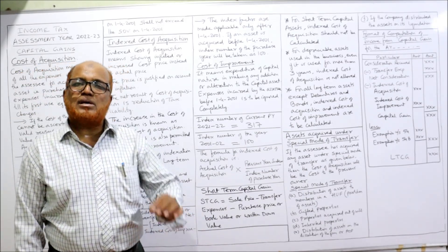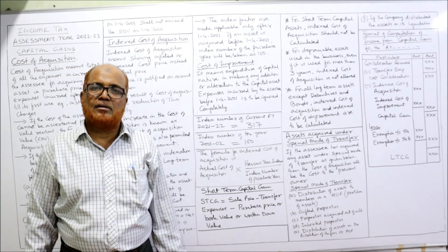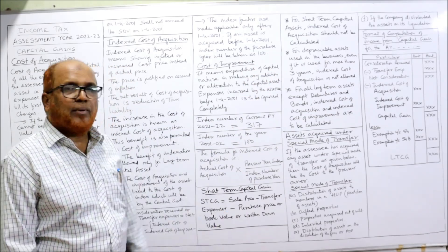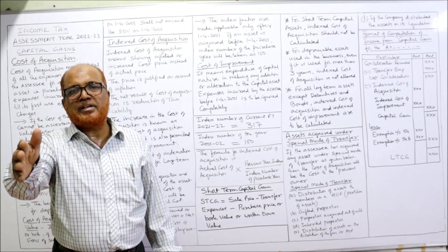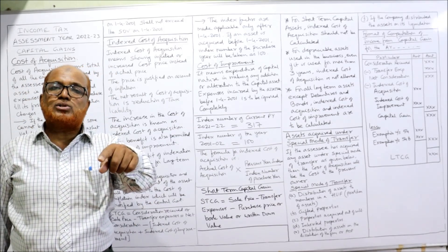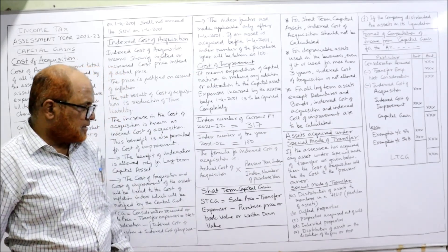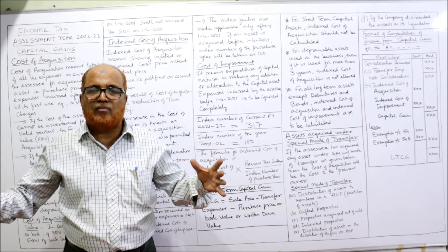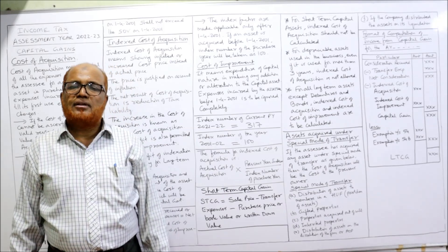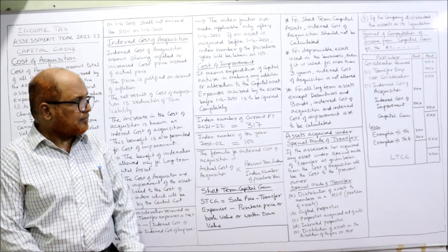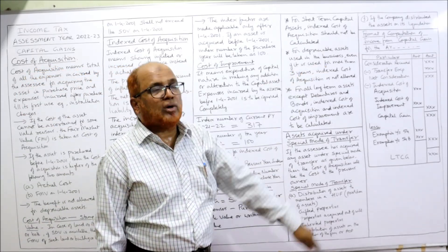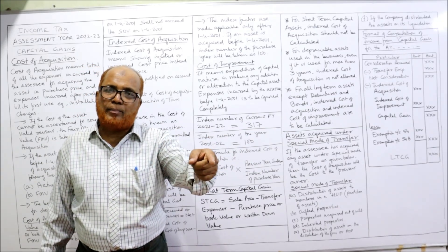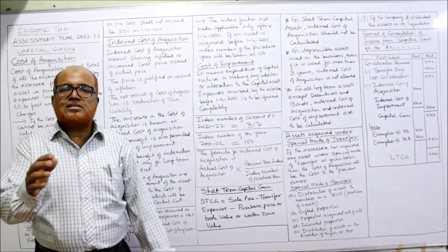Properties acquired through a will — the cost to the previous owner is the cost of acquisition to the assessee. Inherited property — properties inherited from father to son to grandson — the cost to the previous owner is the cost to the assessee. Distribution of assets on dissolution of a firm or association of persons — the cost to the firm will be the cost to the member. If a company distributes assets upon liquidation, the cost of acquisition to the member is the cost to the company. These are all called assets obtained by special mode of transfer.